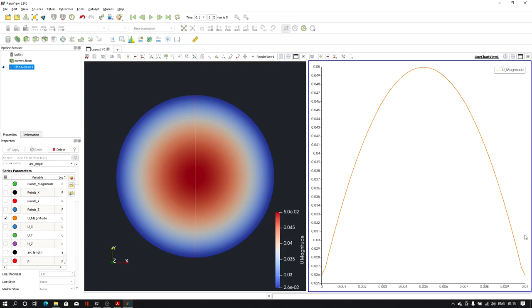Now I have a complete parabola with 0.05 meter per second maximum velocity. This is a complete parabola. So this is all for the codedFixedValue boundary condition.